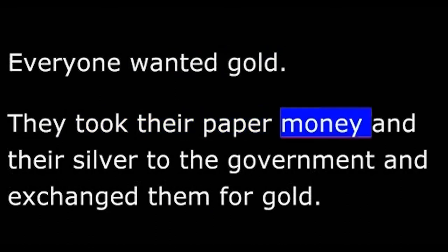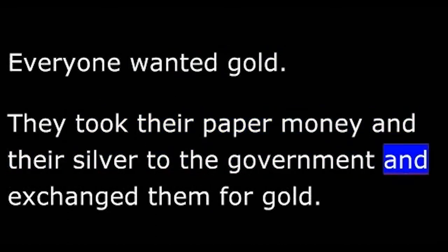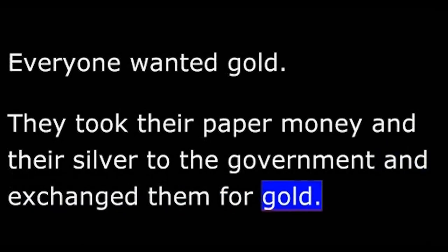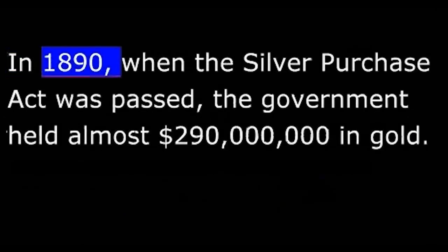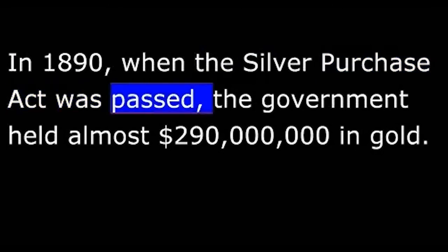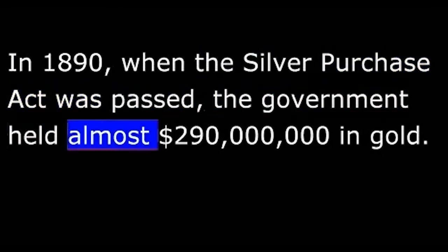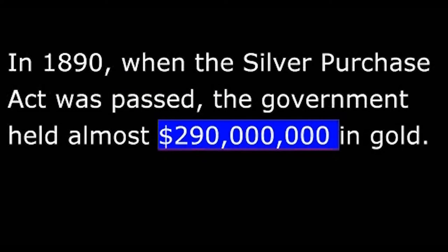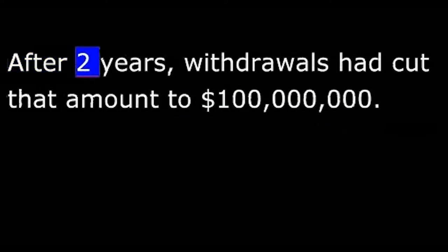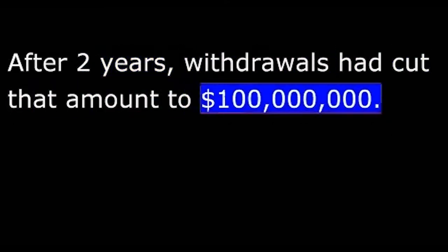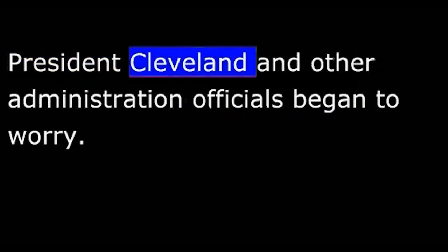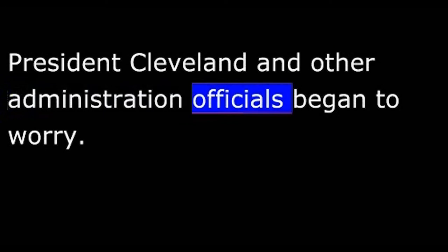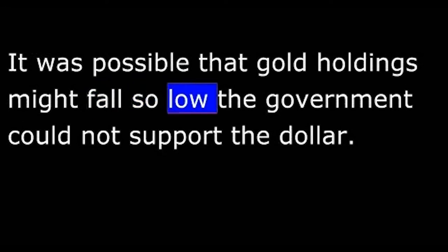They took their paper money and their silver to the government and exchanged them for gold. In 1890, when the Silver Purchase Act was passed, the government held almost $290 million in gold. After two years, withdrawals had cut that amount to $100 million. President Cleveland and other administration officials began to worry. It was possible that gold holdings might fall so low the government could not support the dollar.